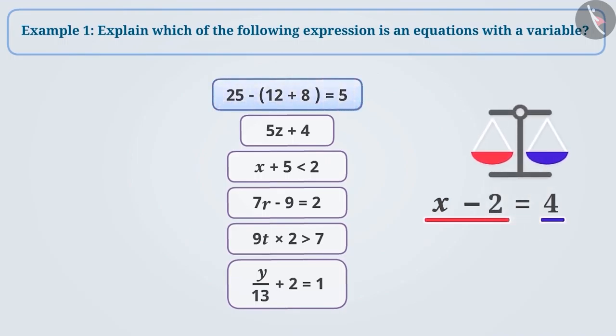25 minus 12 plus 8 is equal to 5. The sign of equality is between both the sides but variable is not present on either side. There are only fixed numbers. So, we will call it numeric equation.